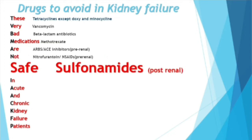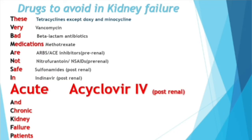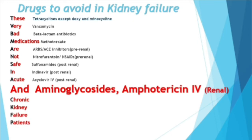'S' is for sulfonamide, which is unique as the only antibiotic that leads to post-renal failure. Similarly, indinavir and acyclovir also lead to post-renal failure. For 'A,' aminoglycosides are antibiotics, and amphotericin IV is an antifungal — both lead to renal injury and should be avoided in renal failure patients.